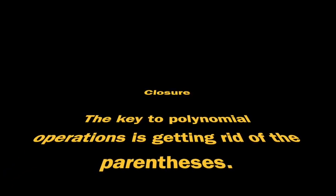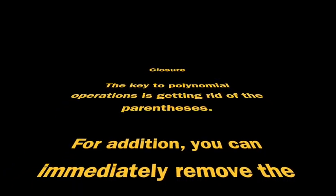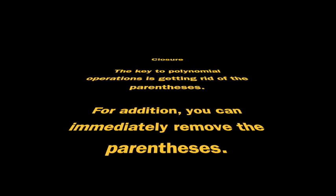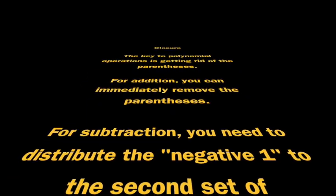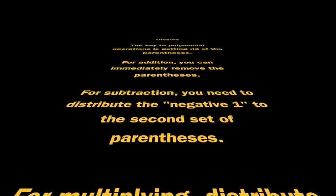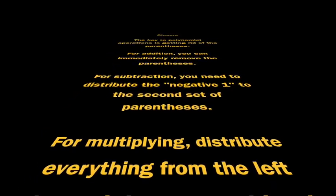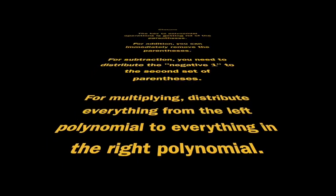In this lesson, we learned about polynomial operations. The key is getting rid of the parentheses. For addition between parentheses, you can immediately remove them. For subtraction, you need to distribute the negative 1 to the second set of parentheses. For multiplying, distribute everything from the left to everything on the right. Write down anything else you need to remember, and we'll see you next time.